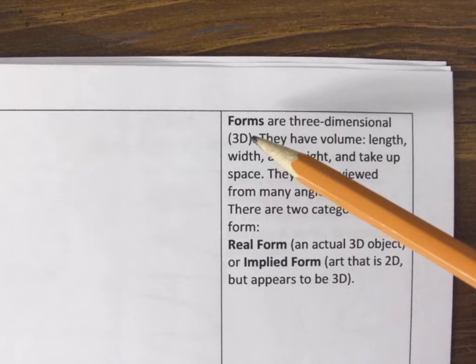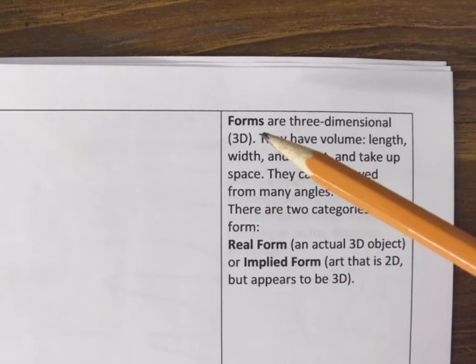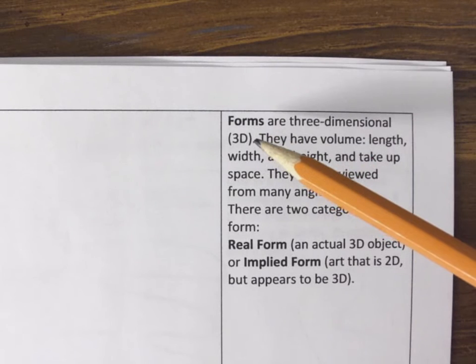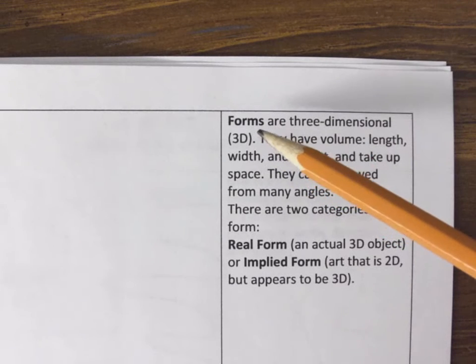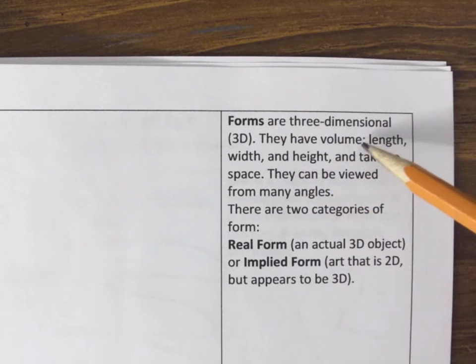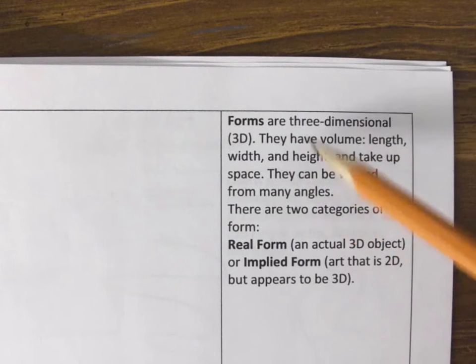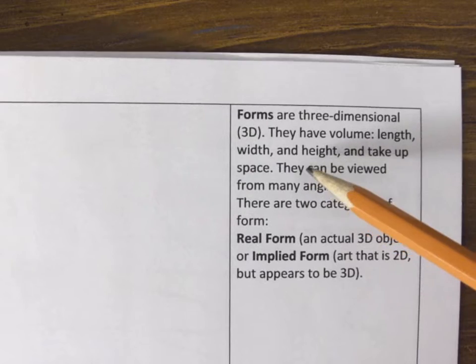Forms is when you take a shape and you illustrate it to look 3D or you shade it in to look 3D. So now it doesn't only have height or length and width, right? You can calculate the actual volume of it. So it's got length, width, and height. So that there's a space inside of it, volume.